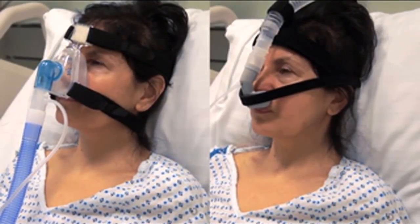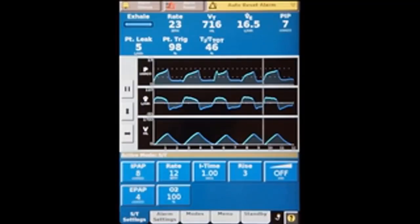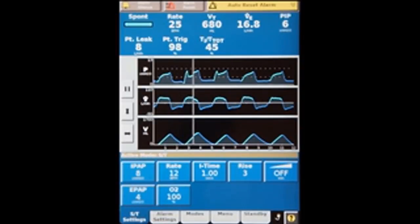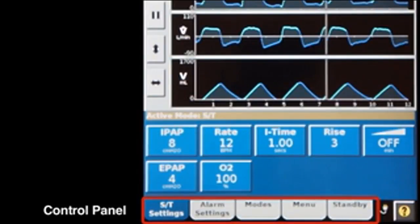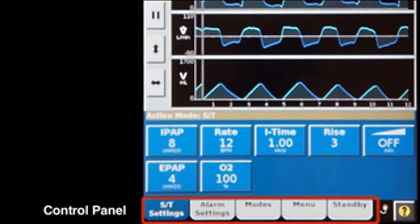Non-invasive ventilators for inpatients typically have a variety of modes, settings, and alarms. On this standard ventilator, the physician can toggle between ventilation settings, alarm settings, and ventilation modes by pressing the buttons at the bottom of the screen.